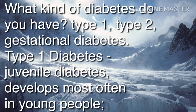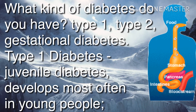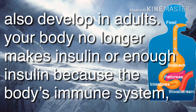There are different kinds of diabetes: Type 1, Type 2, and gestational diabetes. Type 1 diabetes, also called juvenile diabetes, is developed most often in young people but also in adults. In Type 1, your body no longer makes insulin or enough insulin because the body's immune system attacks the insulin-producing cells.